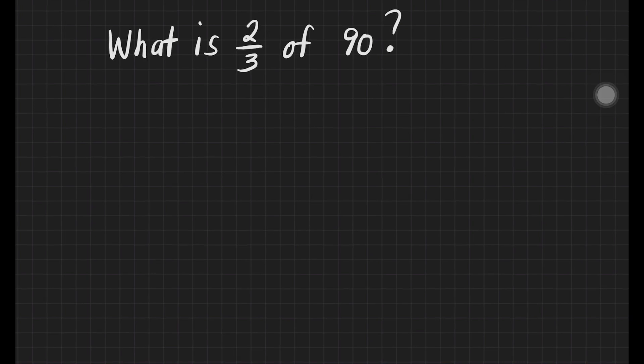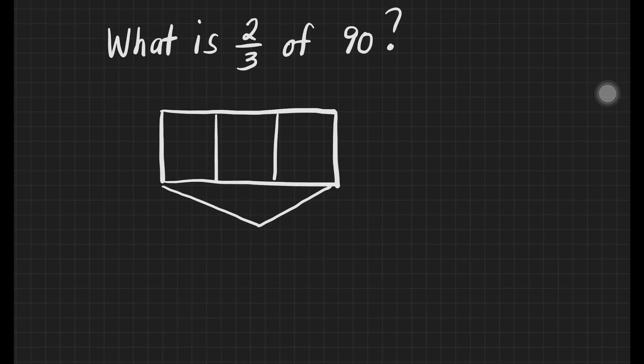The first thing that we should do is to draw a box. This whole is equivalent to 90. What will we do in order for us to get the value of each box? We will just divide it into three equal parts.